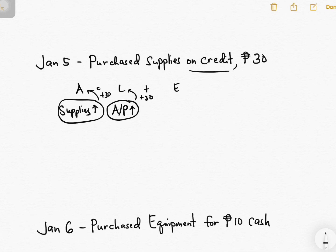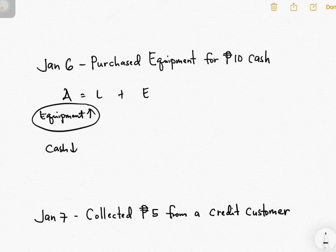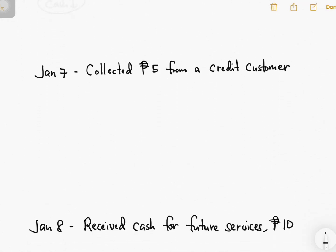Next: purchase equipment for cash. You received equipment, which is under assets, and you paid cash, which is also under assets. Equipment increased because you received it, but cash decreased because you paid. Equipment increases assets by 10, while cash decreases assets by 10 — so plus 10 minus 10 equals zero. The left side is zero, the right side is zero: balanced.